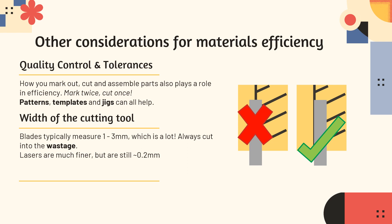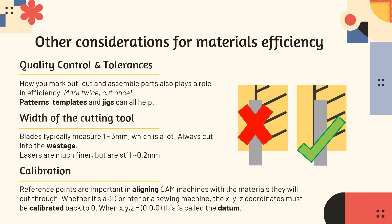We do have things like laser cutting, and lasers are much finer than blades — but they still come in at around 0.2 millimetres. So if you're creating an engineered machine part for an aeroplane, that can still make a difference. Lastly, we're thinking about calibration. Reference points are important in aligning CAM machines with the material they're going to cut through — whether it's a 3D printer, a laser cutter, or a sewing machine. The X, Y, and Z coordinates have to be calibrated back to zero after each use, and when X, Y, and Z all equal zero-zero-zero, that's called the datum.